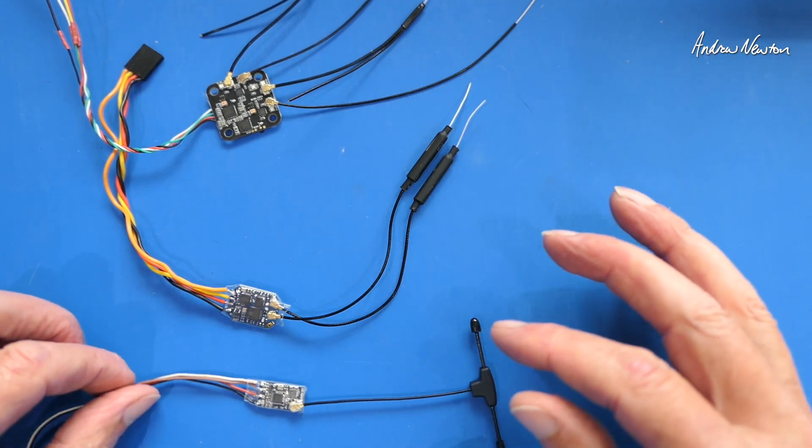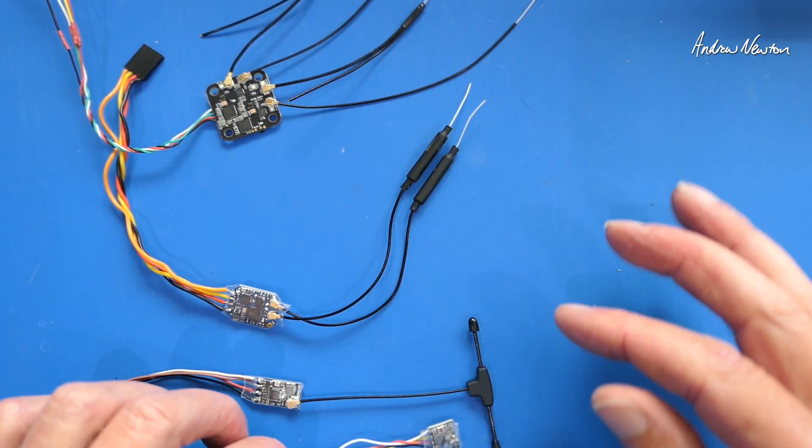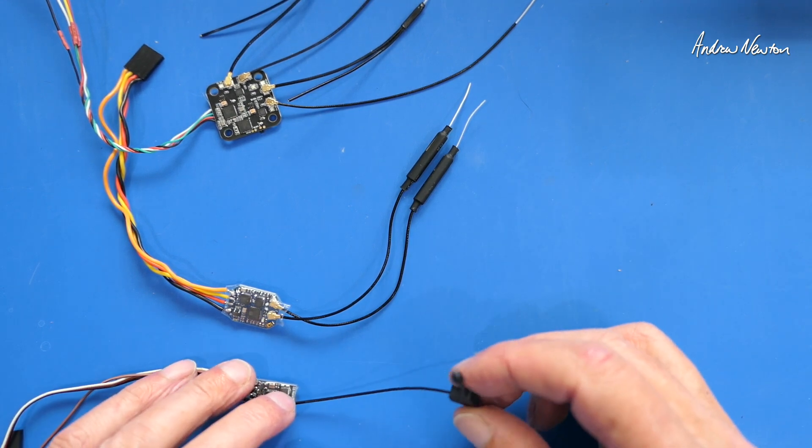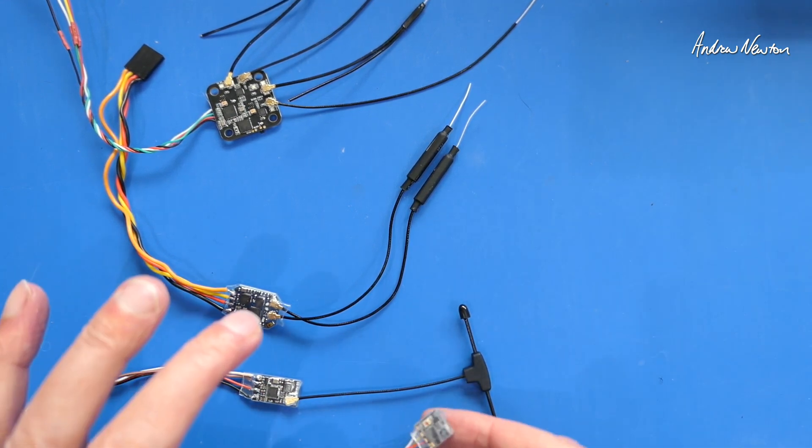Any of the ExpressLRS receivers will be able to get you that sort of range. But yeah, I prefer to have a more decent antenna for more link security, I suppose.